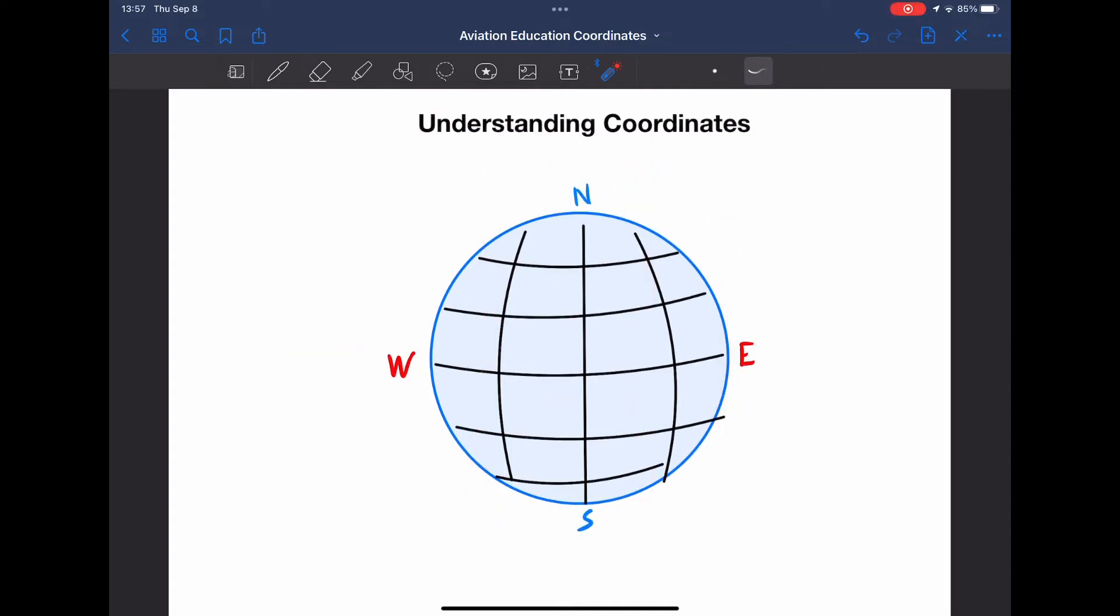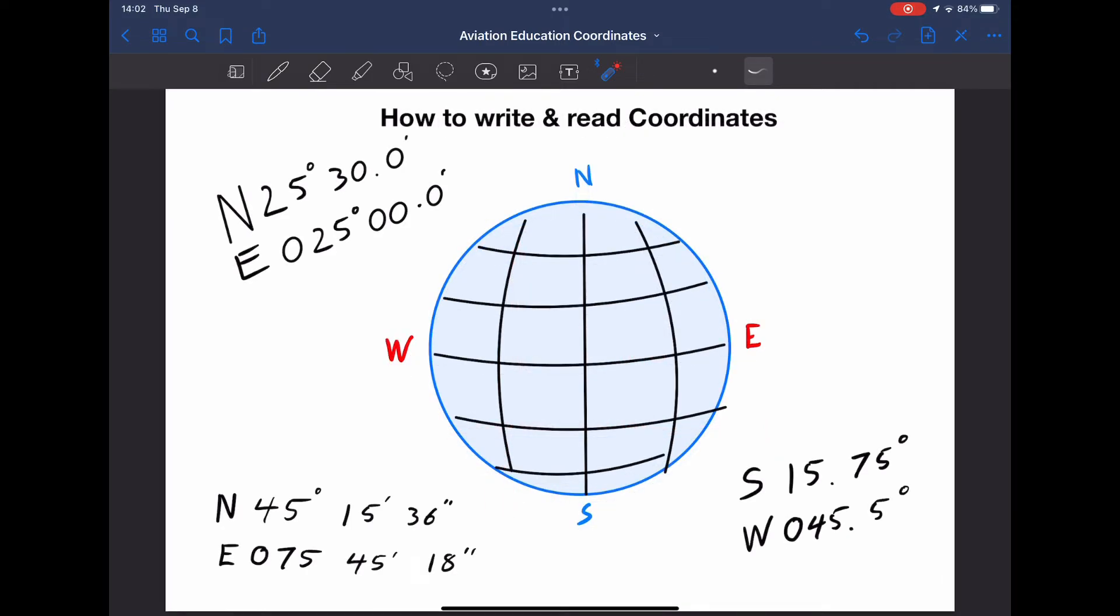Now that we have a lat-long system, we can start plotting points on the surface of the planet. We use numbers to describe these coordinates, not letters. Take a guess at what the units are. If you said degrees, you were correct. Now we're really getting into the core concept of coordinates. We already have the understanding part down. Now we have to write and be able to read coordinates.